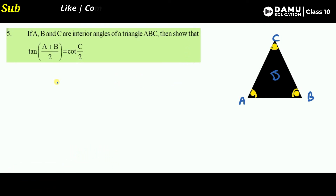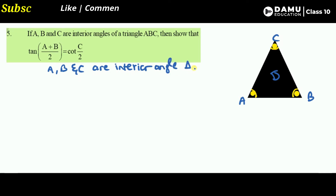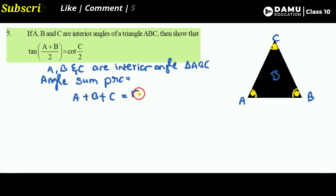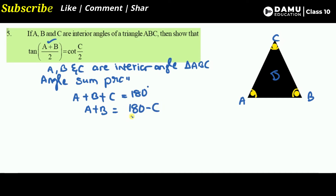So what are the angle properties of triangles? A, B, and C are the interior angles of triangle ABC. By the angle sum property of a triangle, angle A plus angle B plus angle C will be equal to 180 degrees. So keeping A plus B on the left side, the right side becomes 180 minus C.